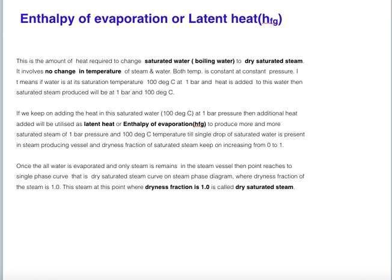The enthalpy of evaporation or latent heat of vaporization, denoted by HFG, is the amount of heat required to change saturated water — boiling water — to dry saturated steam. This involves no change in temperature; temperature remains constant at constant pressure. For example, if water is at saturation temperature 100°C at 1 bar and heat is added, the saturated steam produced will also be at 1 bar and 100°C. Additional heat added is utilized as latent heat HFG to produce more and more saturated steam until only steam remains.